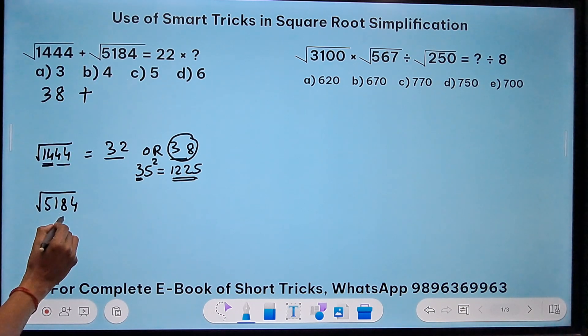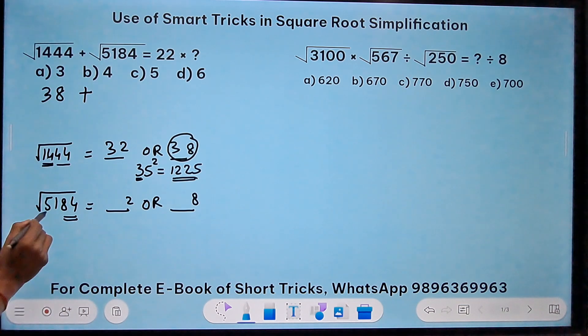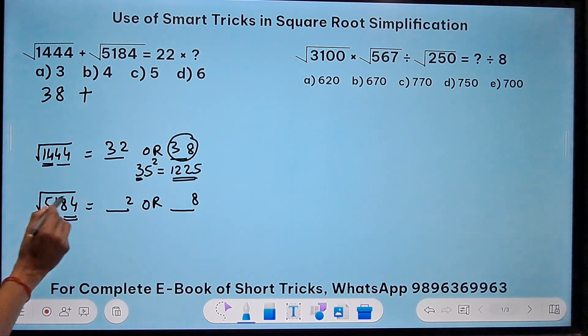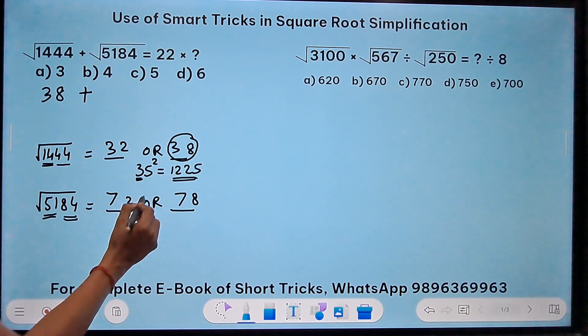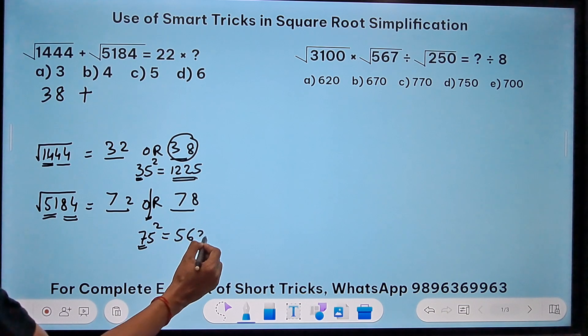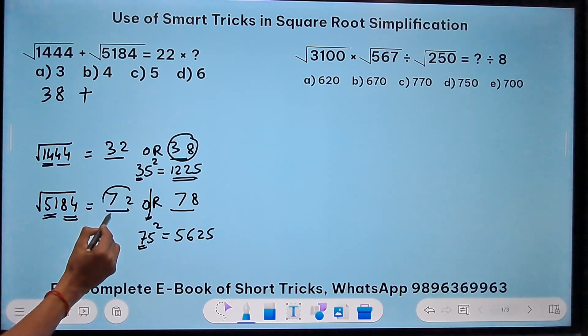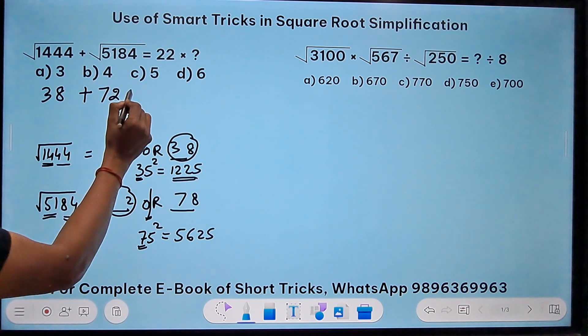So 1444 is more than this, and therefore, the larger one is the square root. So this is 38. Likewise, 5184 again, it ends in two or it ends in eight. 51, the closest square is seven. So seven square is 49. Now the intermediate number is 75. So 75 square, seven eights are 56, followed by 25. Now you can see this number is smaller than this.